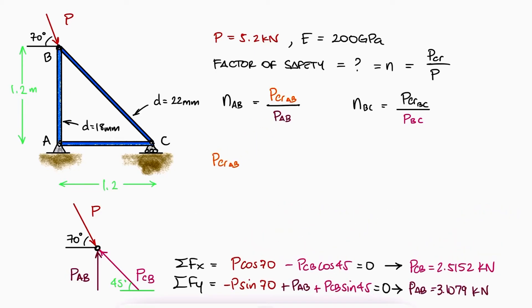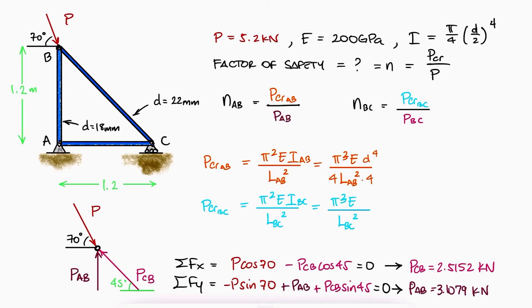The critical loads for each case can be found using Euler's formula. With a second moment of area I of pi over 4 times R to the 4th, we can substitute all values to find those critical loads.